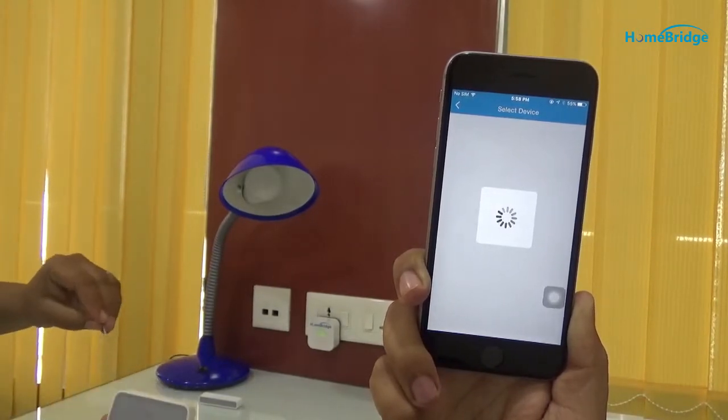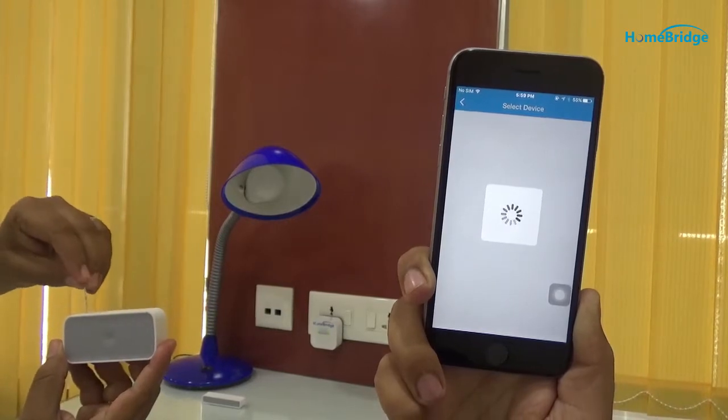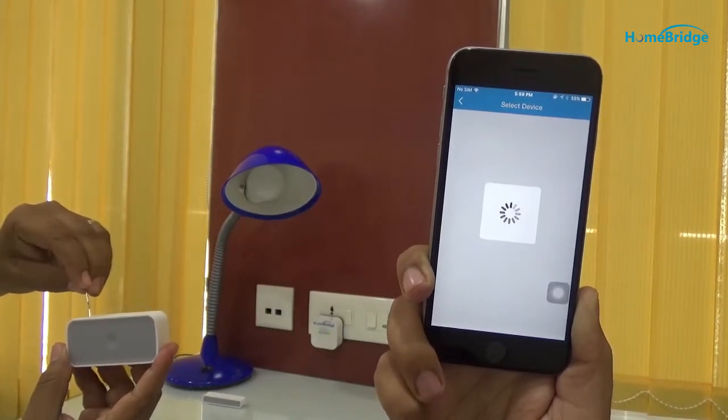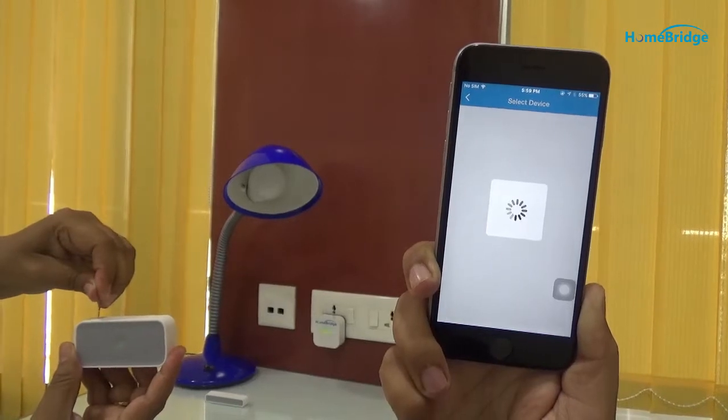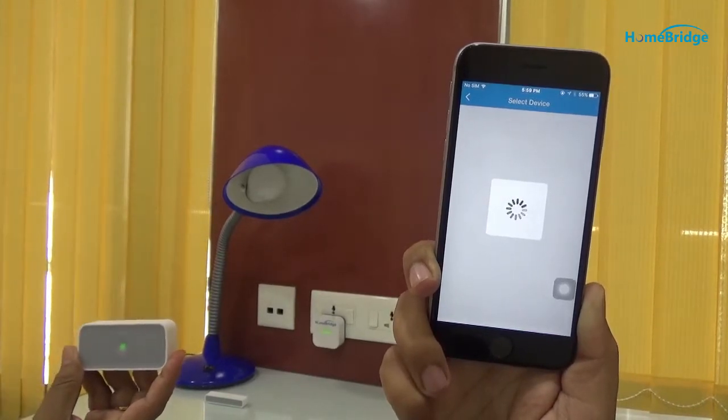In order to make your door sensor on commissioning mode, you need to insert needle in the hole of the sensor and long press there. You can see the green light blinking here. It shows that the sensor is in commissioning mode.